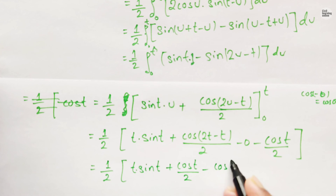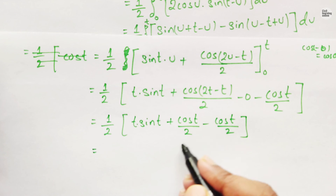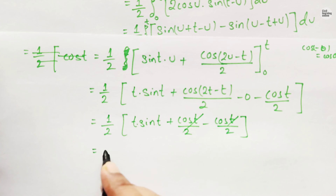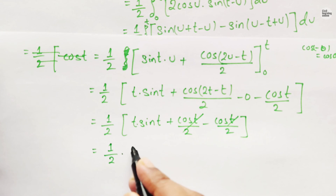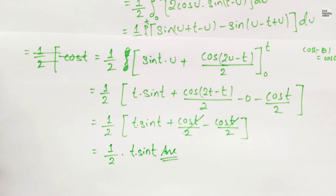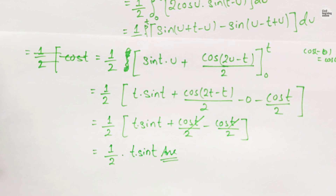We have (1/2) times [t·sin(t) + cos(t)/2 − cos(t)/2]. The cos(t)/2 terms cancel out, giving us (1/2)·t·sin(t). This is our final answer. I hope you understood this numerical example. Stay connected with the Civil Learning Online channel if you want to learn more about engineering topics. Until the next video, stay safe and take care of yourself.